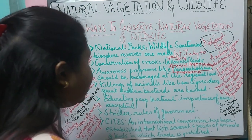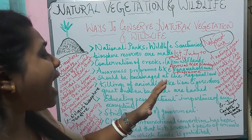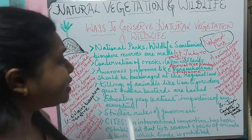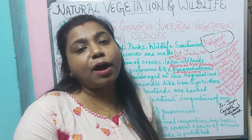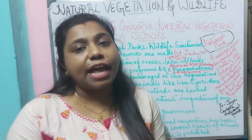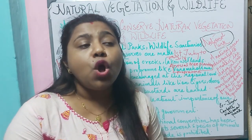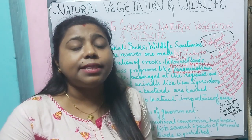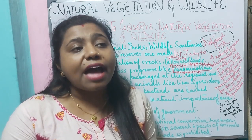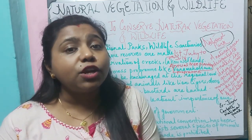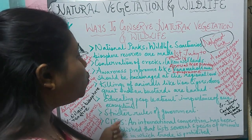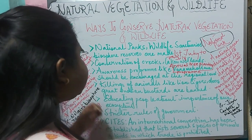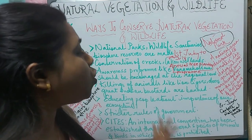The next way is stricter government rules. The government should frame strict rules and laws so that killing of animals and cutting down of forests is restricted. According to the national forest policy, we do not yet have the desired amount of forest cover. We need to encourage people to realize the importance of forest cover, and this is possible only by restricting the cutting down of trees through stricter government rules.